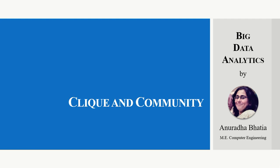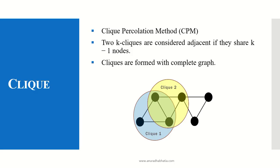Let's start with what is a clique and what is a community. A clique, which is commonly known as a clique percolation method, is nothing but a connection of nodes which are formed when the graphs are connected and they are known as complete graphs. Two cliques are considered adjacent if they share k-1 nodes. Cliques are formed with a complete graph.